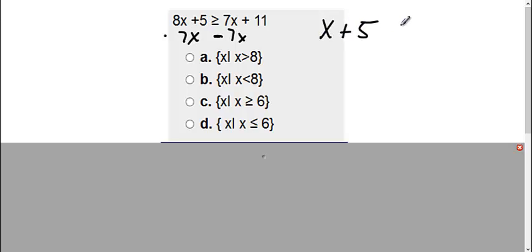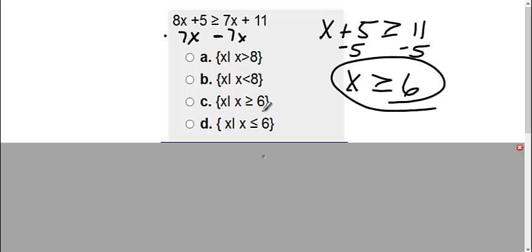I still have plus 5 is greater than or equal to 11. Again, we're still trying to get our x by itself, so I need to move this 5. So I'm going to subtract 5 on both sides. Therefore, I get x is greater than or equal to 11 minus 5 is 6. Here's our answer, which is choice C.